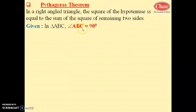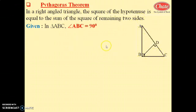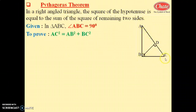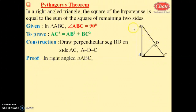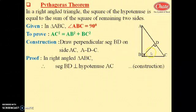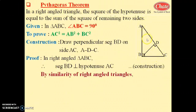To prove this, we take triangle ABC where angle ABC equals 90 degrees. We have to prove AC squared equals AB squared plus BC squared — hypotenuse squared equals one side squared plus the other side squared. To prove this, we draw segment BD perpendicular to hypotenuse AC such that A-D-C. By similarity in right angle triangle, all three right angle triangles are similar to each other: triangle ABC is similar to triangle ADB is similar to triangle BDC.